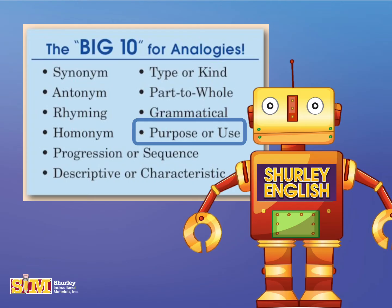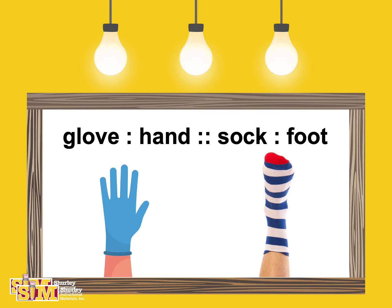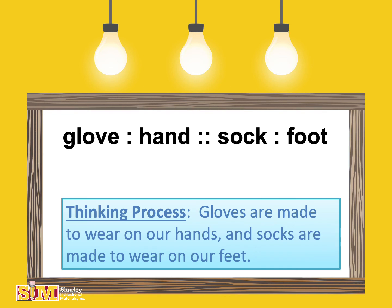Now let's look at a purpose or use analogy. Read it with me: glove is to hand as sock is to foot. Here's the thinking process: gloves are made to wear on our hands, and socks are made to wear on our feet.